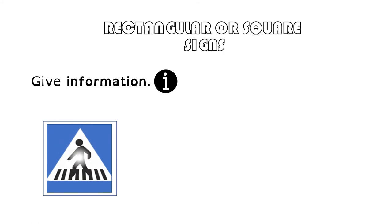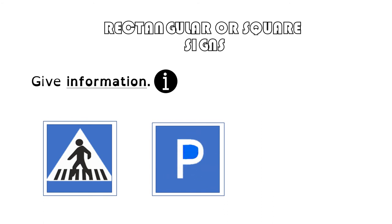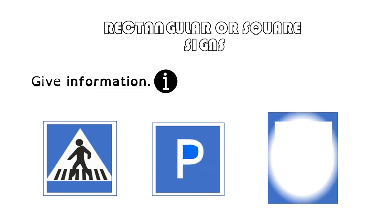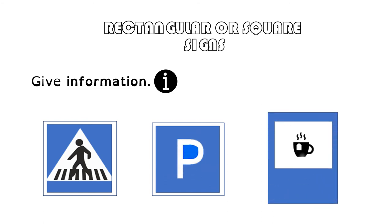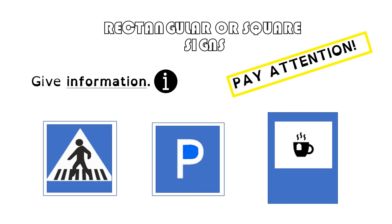For example, there is a pedestrian crossing, there is a car park, or there is a cafe or restaurant. You need to pay attention to those signs.